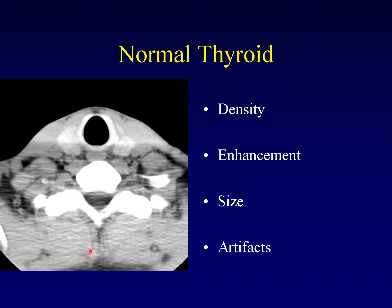The region of the thyroid gland is prone to artifacts. This beam hardening artifact running across the center of the thyroid gland is common. It comes from beam hardening from the shoulders. Sometimes we will try to draw the shoulders down to get them out of the way if we are imaging for thyroid pathology, but often this is impossible in larger individuals.